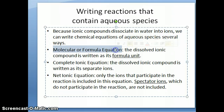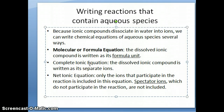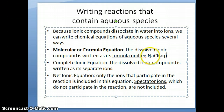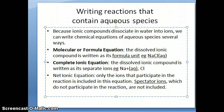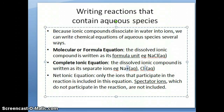The first type is what we call the molecular or formula equation. This is where you write the ionic compound as its formula unit — for example, you write NaCl aqueous, even though it doesn't really exist that way. The second type is called the complete ionic equation. Instead of writing sodium chloride as NaCl aqueous, you write it as Na+ aqueous and Cl− aqueous — you write out all the ions separately.